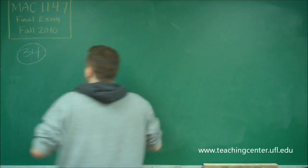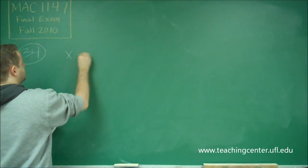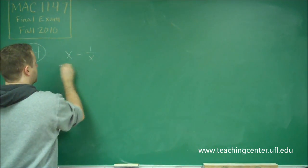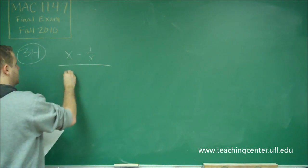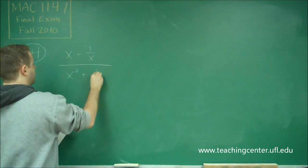The numerator is x minus 1 over x—that's what x to the negative 1 power is. On the denominator, we have x squared plus 1 over x.